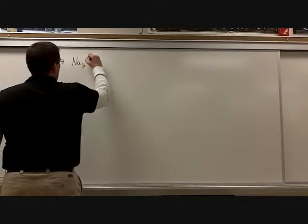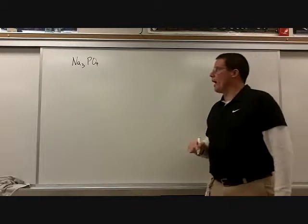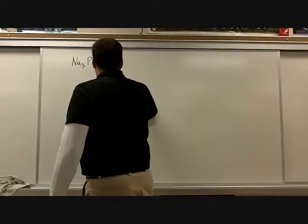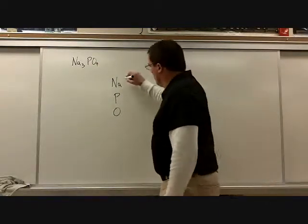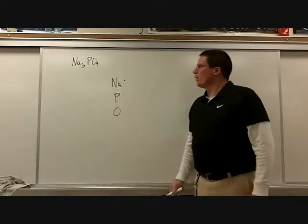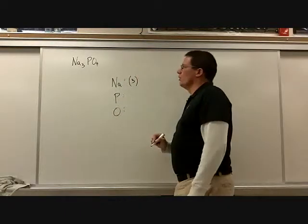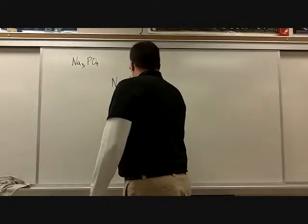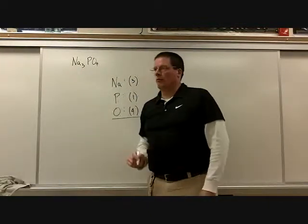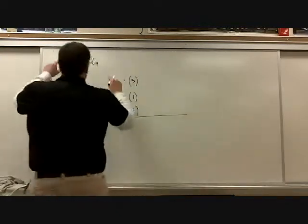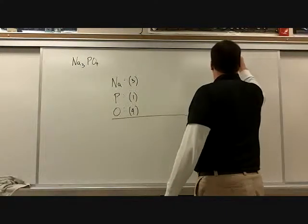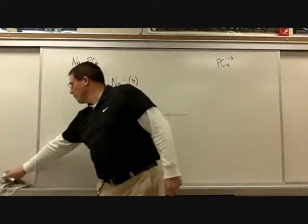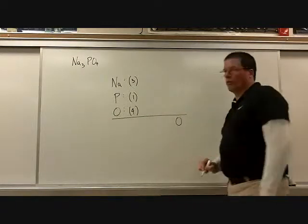We have the formula Na₃PO₄. Here's the easiest way: line up the atoms — sodium, phosphorus, and oxygen. How many sodium atoms? Three. Phosphorus? One. Oxygen? Four. What is the total charge on this compound? Zero — there's no charge listed. If I were looking at phosphate by itself, the charge is -3, but when I add three sodiums to it, that charge goes away. Most of the time when I ask for the charge on the compound, it will be zero.